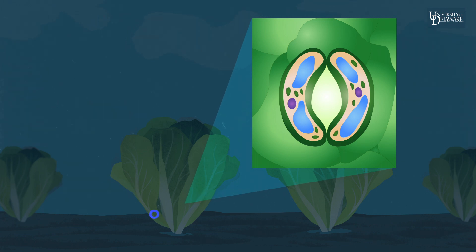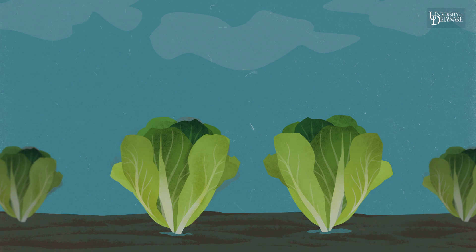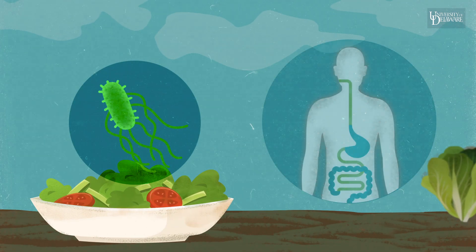When the system recognizes a threat, the stomates close like an elevator door to prevent entry. However, Salmonella has found a way to slip through these doors into lettuce and spinach and jump to humans.